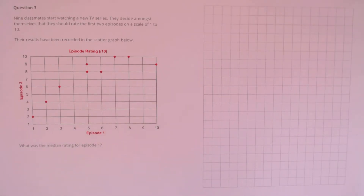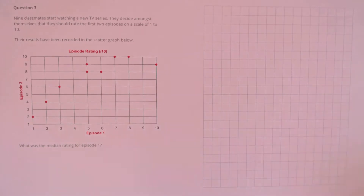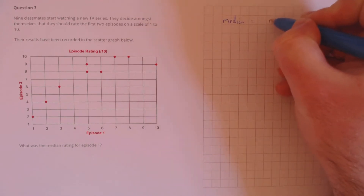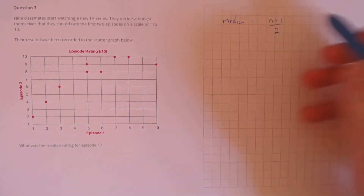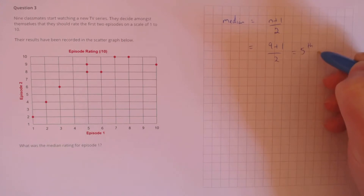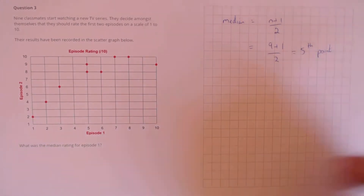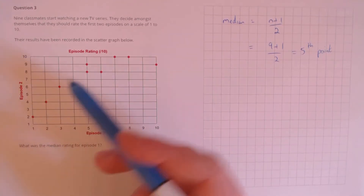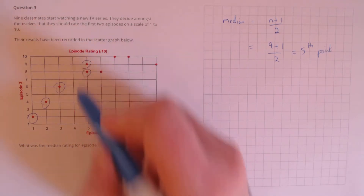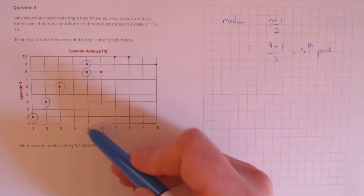Question 3. Nine classmates start watching a new TV series and rate the first two episodes on a scale of 1 to 10. Their results have been recorded in the scattergraph below. What was the median rating for episode 1? We know there are nine classmates and the median is given by (n+1)/2, so that's (9+1)/2, meaning we're looking at the fifth data point. Counting up on the episode 1 axis in ascending order: 1, 2, 3, 4, 5 — this fifth data point is the median, which is 5.